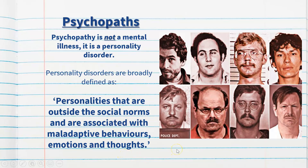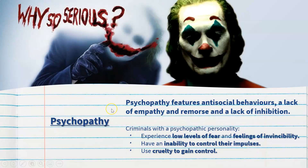There are several personality disorders in the DSM-5. In this course we've focused on two: psychopathy or antisocial personality disorder being one, and narcissistic personality disorder which I'll talk about in a separate video. Psychopathy features antisocial behaviors, a lack of empathy and remorse, and a lack of inhibition.